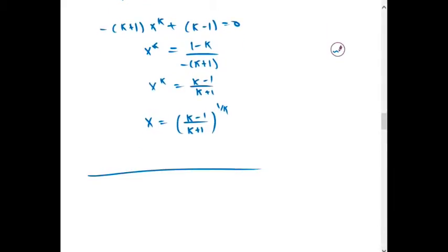And check the sign graph of f double prime. By plugging in large positive values, we see that f double prime is negative